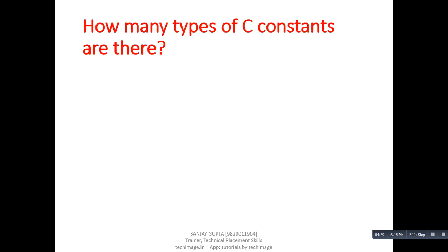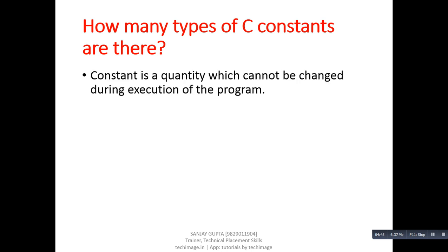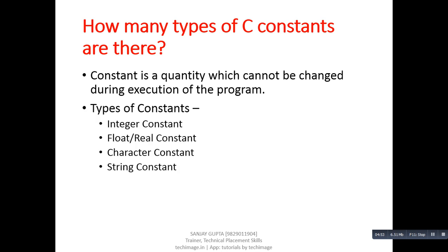Next question: how many types of C constants are there? Answer: a constant is a quantity which cannot be changed during execution of the program. Types of constants: first is integer, second is float or real, third is character, and fourth is string.